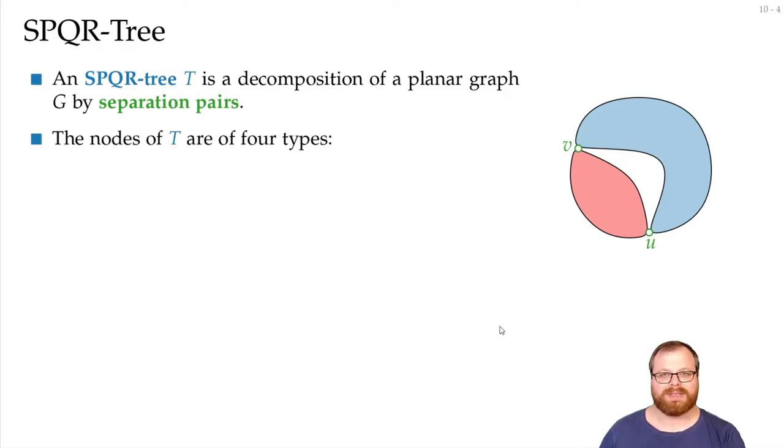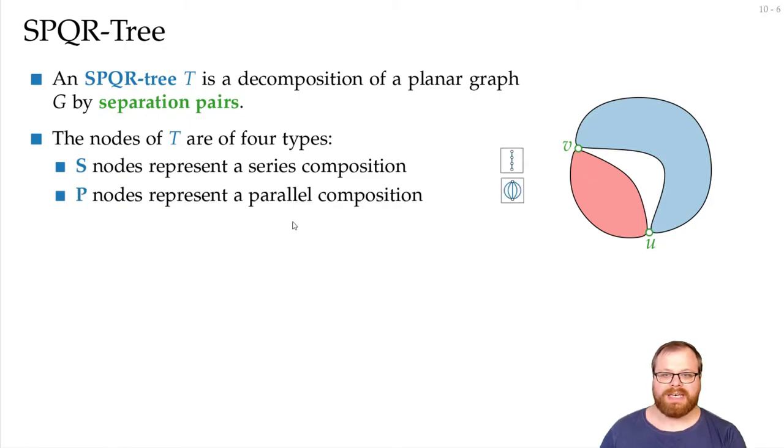There are four types of nodes in this decomposition. We have S nodes, that's a series composition, so we have a path of cut vertices. We have P nodes, that's a parallel composition, so we have a separation pair and a bunch of components between them. We have a Q node, that is just a single edge.